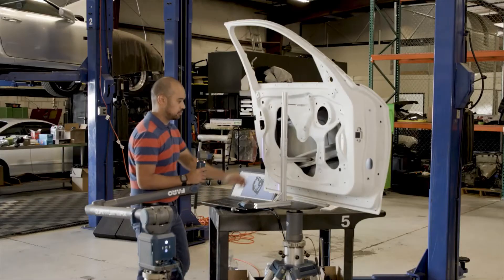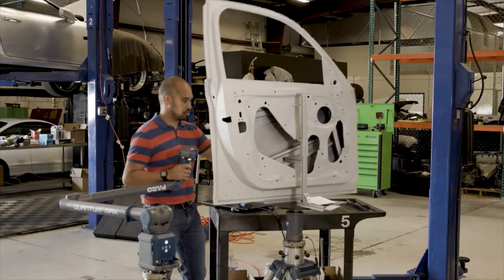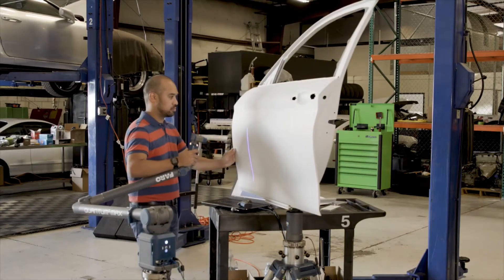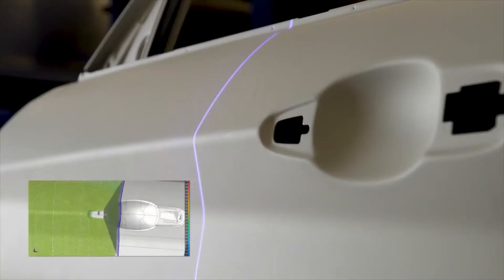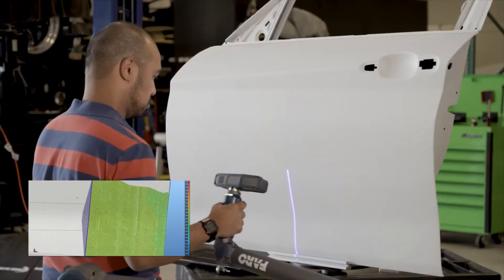For quickly scanning large parts or expansive surface areas, the XS LLP's extra-wide laser stripe delivers increased coverage per pass, collecting data in half the time for faster results and higher productivity.